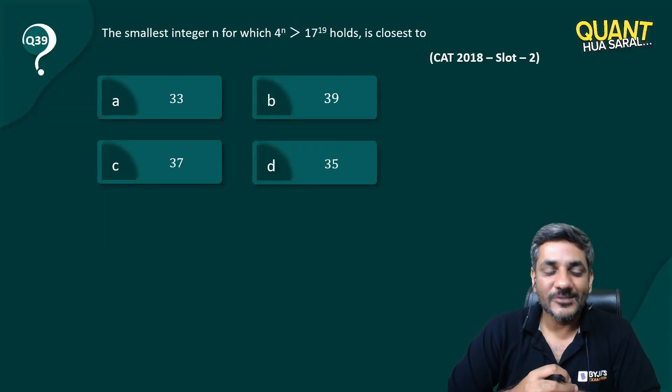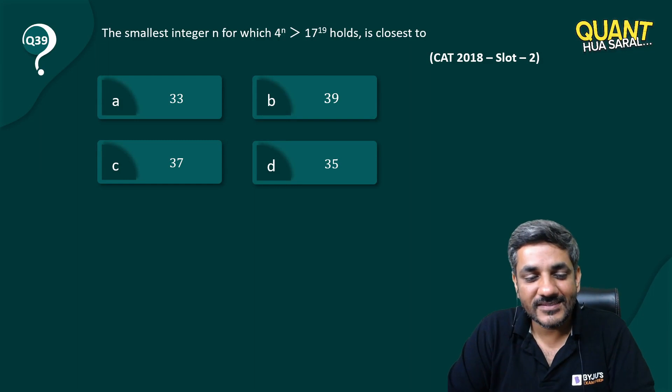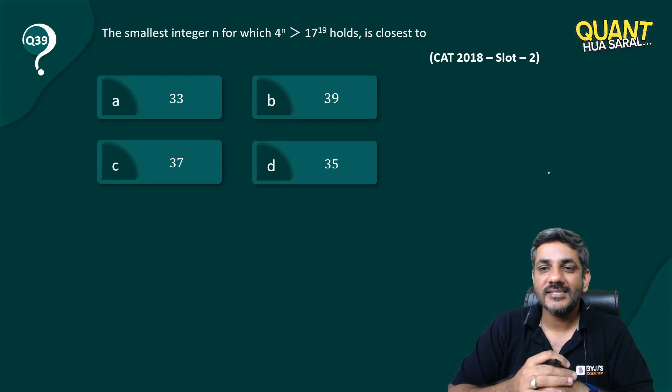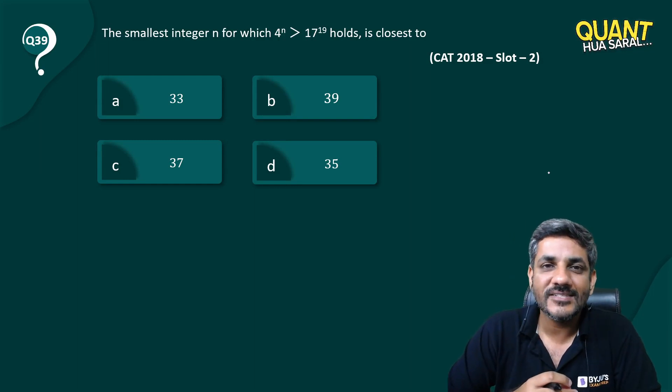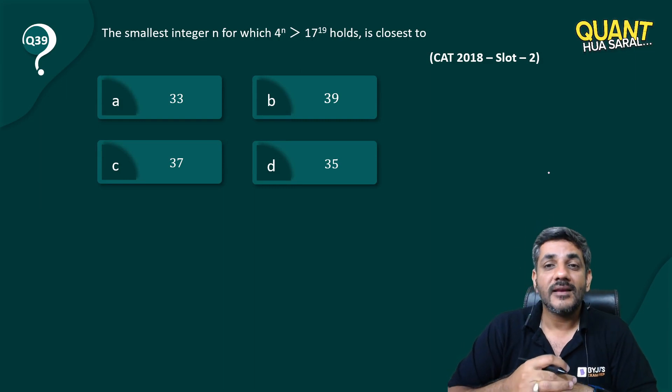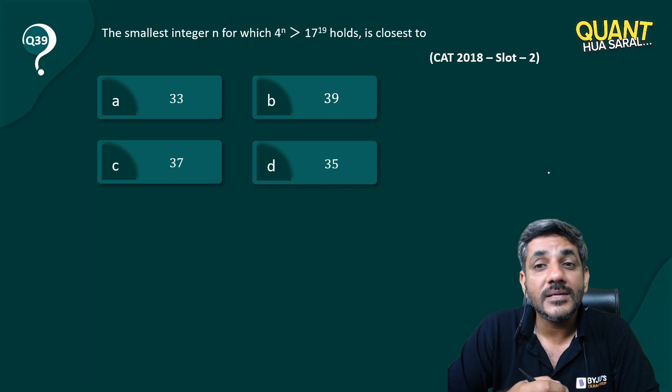Hello, welcome back to question number 39 of series Quant Hua Saral. Here is the question once again from CAT 2018 slot: the smallest integer n for which 4^n > 17^19 holds is closest to...